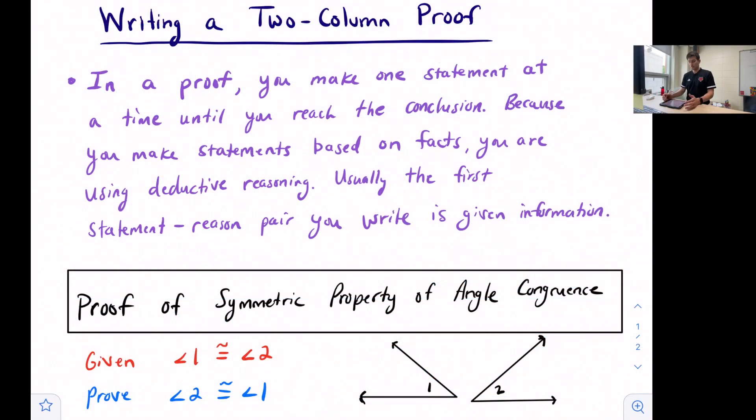This video will talk about writing a two-column proof. In a proof, you make one statement at a time until you reach the conclusion or what you're trying to prove. Because you make statements based on facts, you are using deductive reasoning. Usually the first statement-reason pair we write is given information.